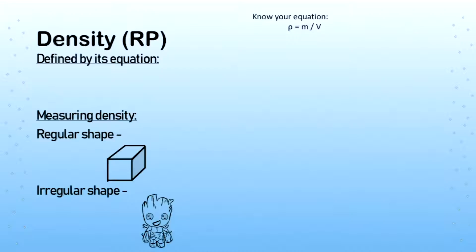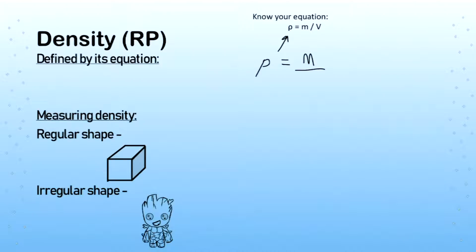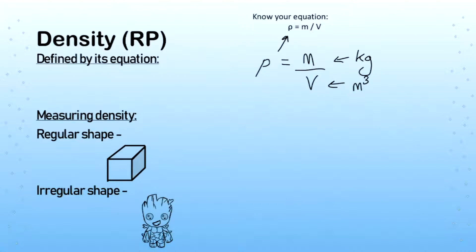For the first part of this topic we need to look at the idea of density. Density is defined by its equation — it's how much mass there is in a certain volume of material. The letter we use to represent density is rho, which is like a slightly slanted sideways p, and that is equal to mass divided by volume. Mass is always measured in kilograms and volume in metres cubed.